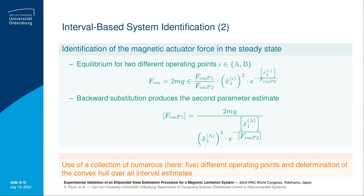Secondly, we perform a backward substitution of this interval expression into the steady-state equilibrium conditions, and therefore we are able to resolve the corresponding expression also for the missing second parameter, which can be expressed in terms of this interval-valued right-hand side. In such a way, we can perform numerous identification experiments. In our case, we have done five experiments and, over the collection of the numerous identified interval quantities, we have formed a corresponding convex interval hull to include all interval estimates within some guaranteed interval bounds that capture the information of all identification experiments carried out.